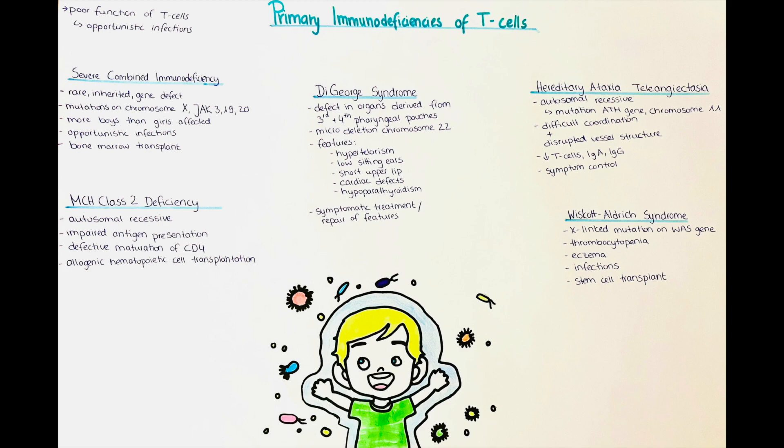Since most of the mutations are X-linked, more boys are affected than girls. The infants born with this disorder seem healthy at first, but they are very quickly predisposed to opportunistic infections, and if they do not get proper treatment they will die within the first years of life. The life-saving treatment is a bone marrow transplant from a histocompatible donor, such as a sibling.